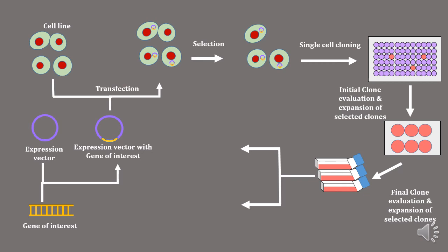The final clones will then be processed for cell banking. Cell banking is a process in which we store our cells for future use at minus 80 degrees centigrade. The process involves the snap freezing of our cultures in liquid nitrogen for production, and then they are moved to long-term storage at minus 90 or minus 80 degrees.